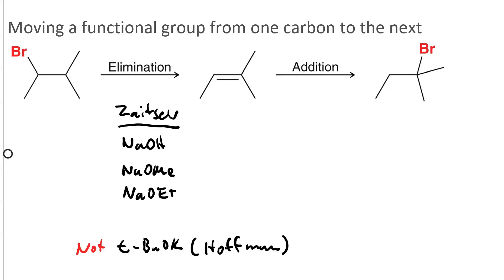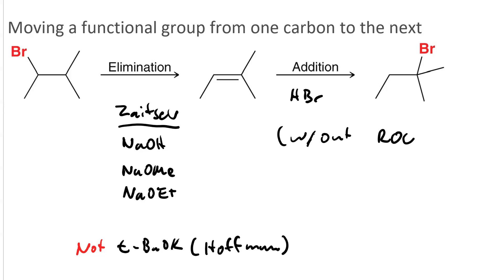Also, in our addition product, it's more substituted. That means Markovnikov addition, so we would just use HBr without peroxide. If we use peroxide, that would give us anti-Markovnikov, which would take us back to where we started.